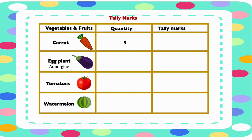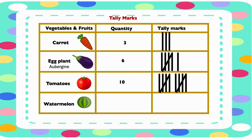They bought 3 carrots, represented by 3 straight lines. They bought 6 eggplants, represented by 1 group of 5 and 1 straight line. They bought 10 tomatoes, represented by 2 groups of 5. They bought 1 watermelon, represented by 1 straight line.